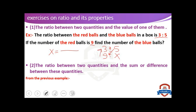x equals 9 multiplied by 5 and divided by 3. So x will be 5 times 9 divided by 3. 9 divided by 3 equals 3, and 3 times 5 equals 15. So x, or the number of blue balls, equals 15.